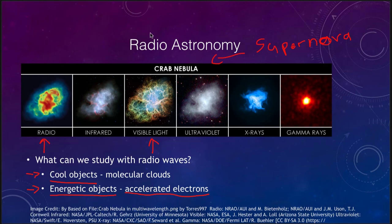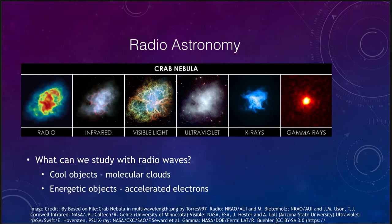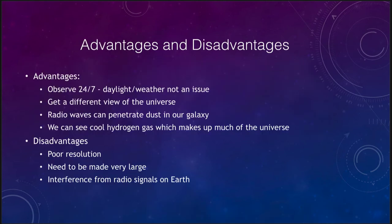Just 100 years ago, all we had was visible light — that was the only way we could observe anything. Now we can observe objects across the spectrum, and it gives us a much more complete view of the universe. So let's look at some of the advantages and disadvantages of using radio telescopes.